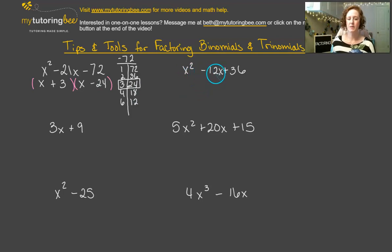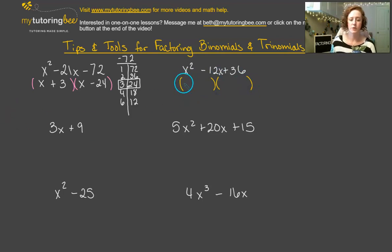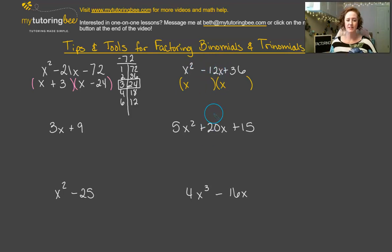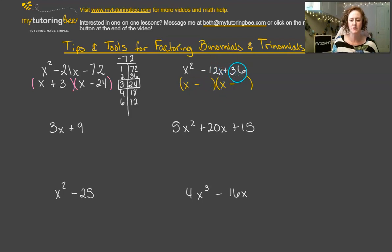Next we've got x squared minus 12x plus 36. Again, can I factor out anything from all three terms? It looks like no, so we go into binomials. I know this is going to be x and x. I look at the last term: is it a perfect square? It is — 36 is 6 times 6. Does that work for the middle term? Yes, 6 plus 6 gives me 12. To get a negative 12, both signs have to be the same and both negative, giving us minus 6 and minus 6. So this is x minus 6 squared — a perfect square trinomial.